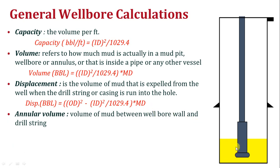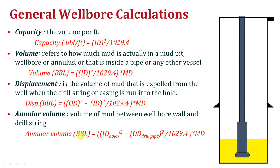What is the annular volume? The annular volume is the space between the open hole or casing and the drill string. The formula is: (inner diameter of hole or casing squared minus outer diameter of drill pipe squared) divided by 1029.4, all multiplied by measured depth. This gives you the annular volume in barrels.